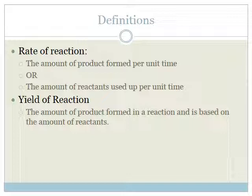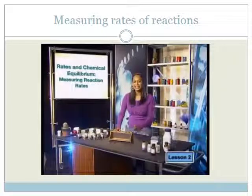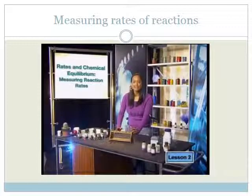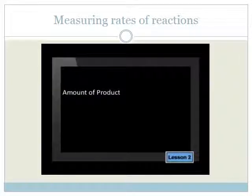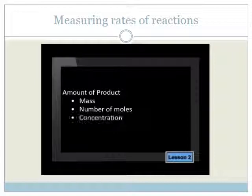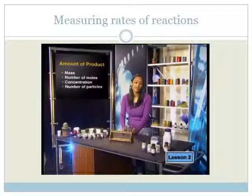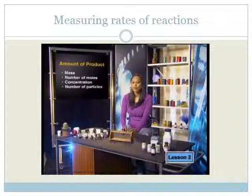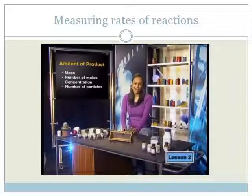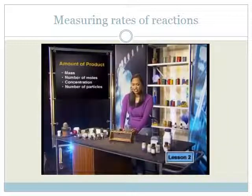One way of finding the rate of a reaction is to measure the amount of products formed in a certain time. We can measure the amount of product by finding mass, number of moles, concentration, or number of particles. If we were measuring the number of particles of a product, we would take measurements over small time intervals, tabulate the data collected, and then plot a graph.